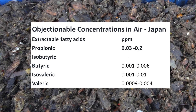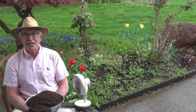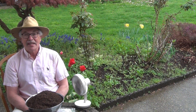According to the Japanese odor control law, the concentration of propionic acid in air that can cause disturbance is 0.03 to 0.2 parts per million. The concentration of butyric acid is much lower, and valeric acid even lower yet, in the parts per billion. Some of these compounds are nasty.